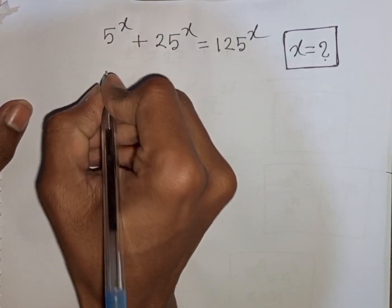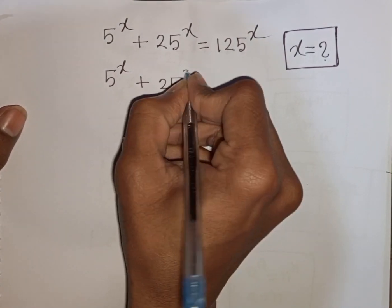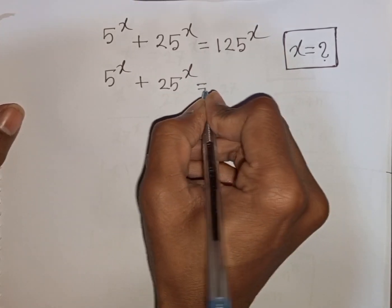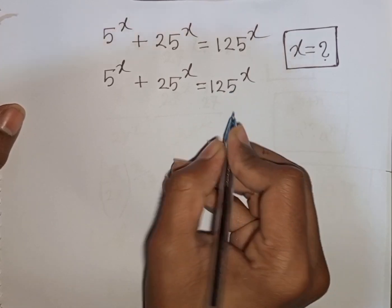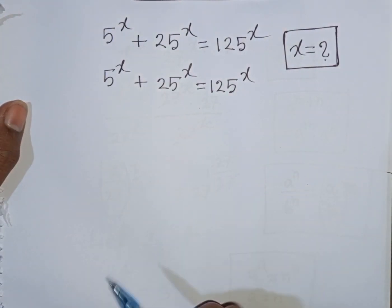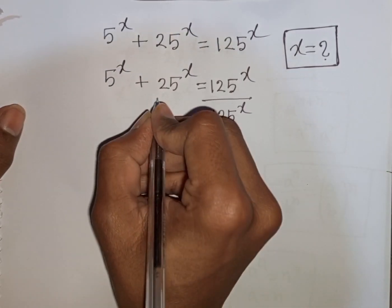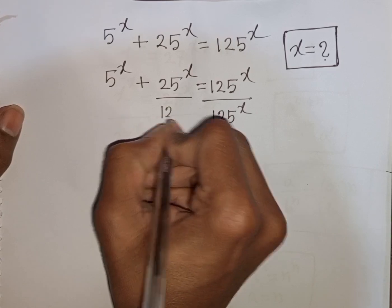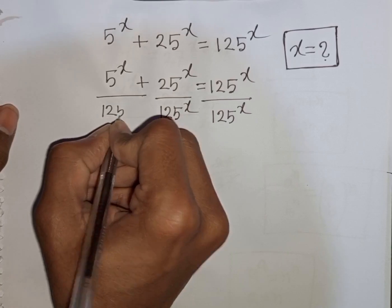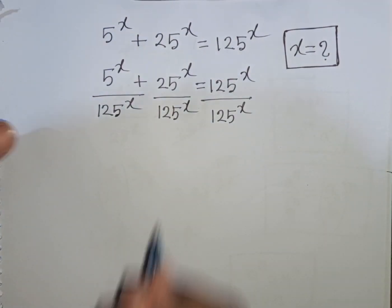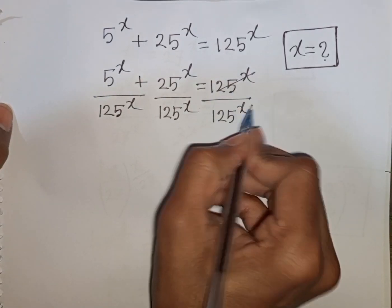So we have 5 power x plus 25 power x is equal to 125 power x. Now we divide by 125 power x on both sides, so the 125 power x will be cancelled.